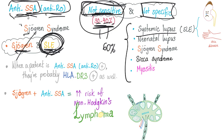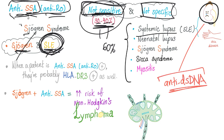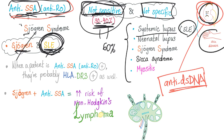If anti-SSA happens in lupus, it's associated with lupus nephritis. Remember, both anti-double-stranded DNA and anti-SSA are associated with lupus nephritis. What else? In lupus, anti-SSA is also associated with skin disease. So if a patient has lupus with anti-SSA and anti-double-stranded DNA, think lupus nephritis. If they have anti-SSA alone, also think skin disease.